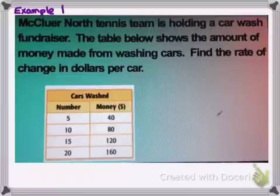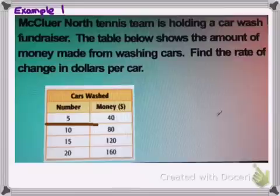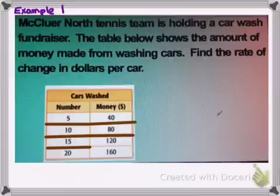Here's our first example. We're going to look at a table. McClure North Tennis Team is holding a car wash fundraiser. The table below shows the amount of money made from washing cars. And we want to find the rate of change in dollars per car. So how you read this table is, if you washed five cars, you'd make $40. If you washed 10 cars, you'd make $80. If you washed 15 cars, you'd make $120.